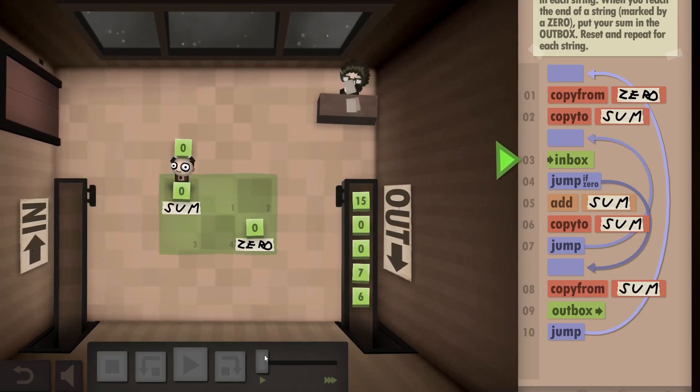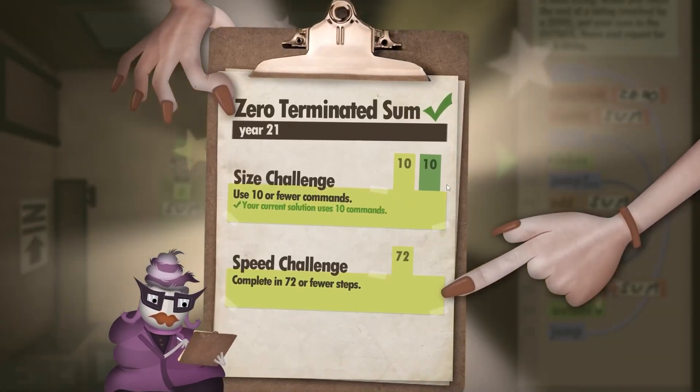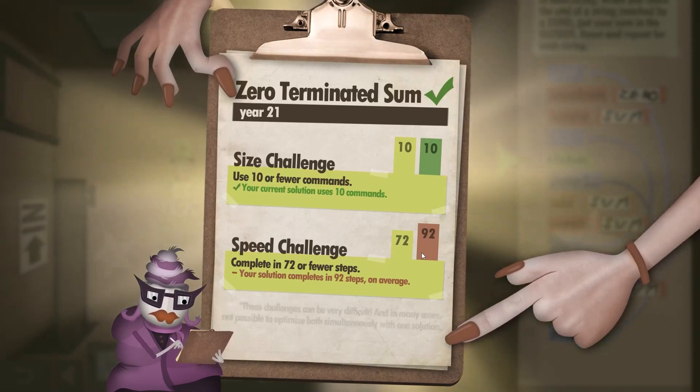15. Okay, whatever. Yeah, that's it. It worked. Beautiful. And we completed the size challenge already. But it's a bit too slow. So we've used too many steps on average.